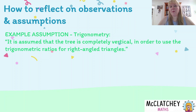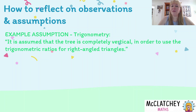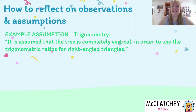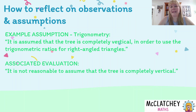Here are examples of how to reflect on observations and assumptions — showing a statement and then turning it into an evaluation. First example: trigonometry. It is assumed that the tree is completely vertical in order to use trigonometric ratios — sine, cosine, and tan — for right angle triangles. In real life very few trees are absolutely vertical, but we need that assumption to use our formulas. A plain statement would be: 'It is not reasonable to assume the tree is completely vertical. It enabled us to solve the problem, but very few trees are.' That's just one sentence — a statement, not an evaluation.